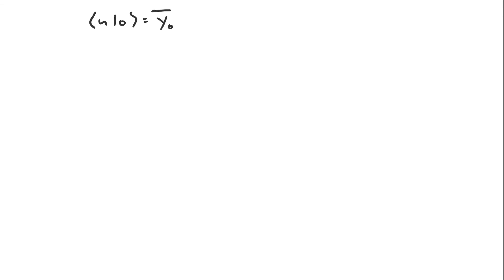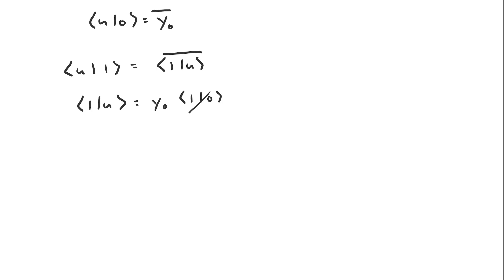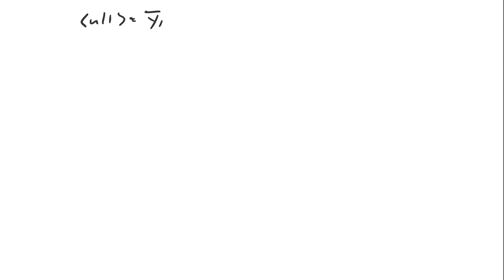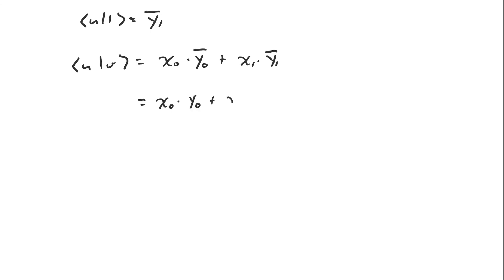To figure out the inner product of u and |1⟩ we do basically the same thing — it equals the complex conjugate of the inner product of |1⟩ and u. Using linearity, the inner product of |1⟩ and u equals y0 times the inner product of |1⟩ and |0⟩, which is 0, plus y1 times the inner product of |1⟩ with itself, which is 1. So the whole thing is just y1, and therefore the inner product of u and |1⟩ is the complex conjugate of y1. So the inner product of u and v equals x0 times the complex conjugate of y0 plus x1 times the complex conjugate of y1.